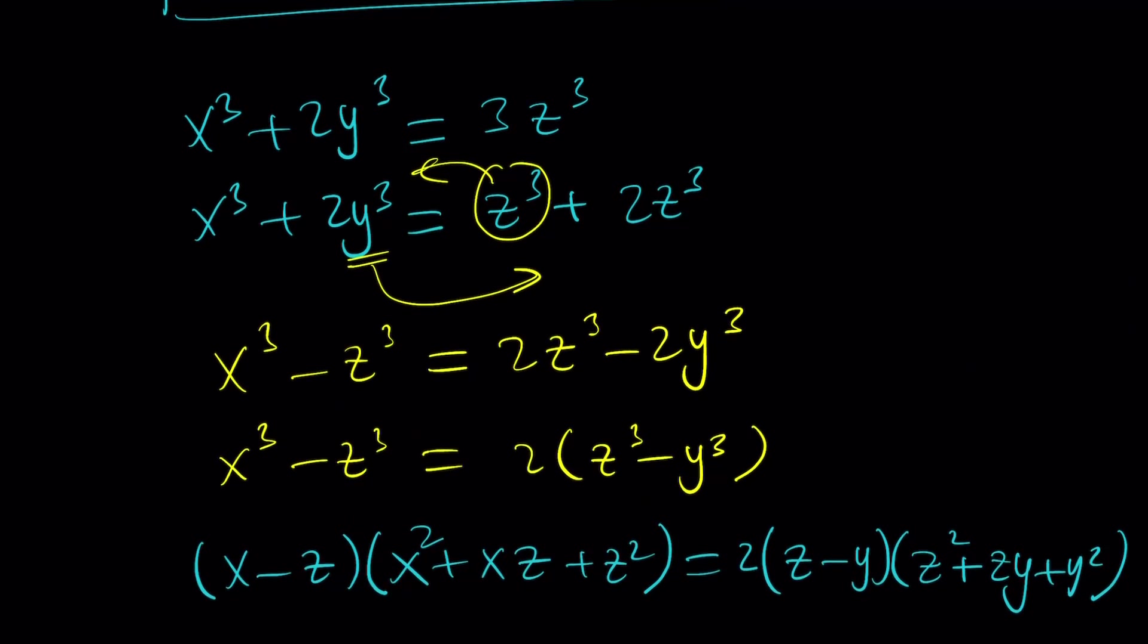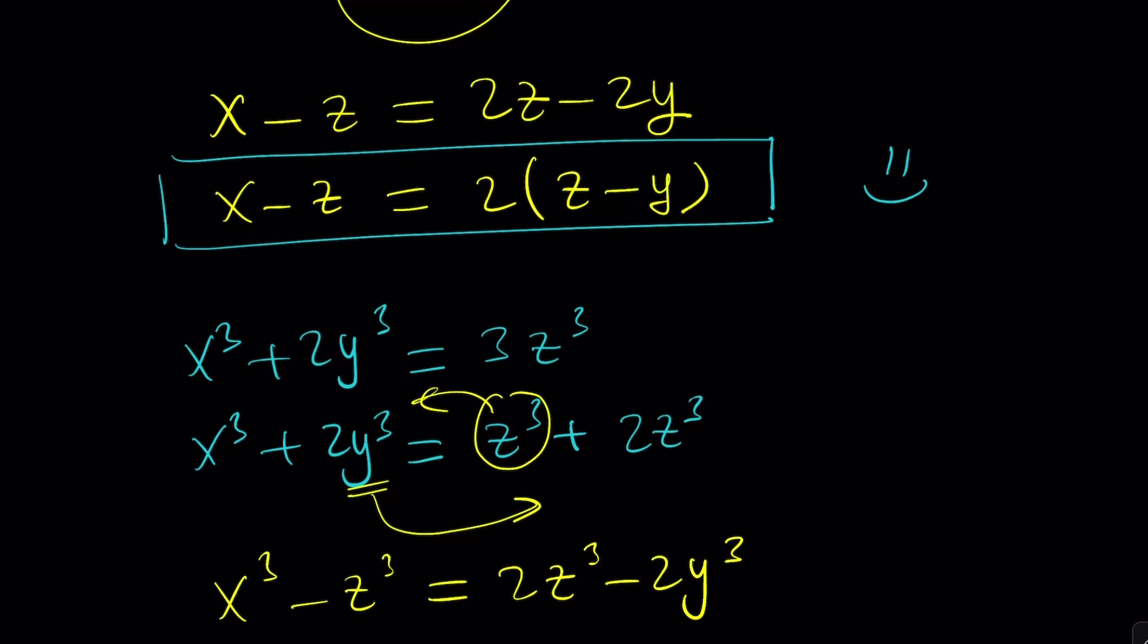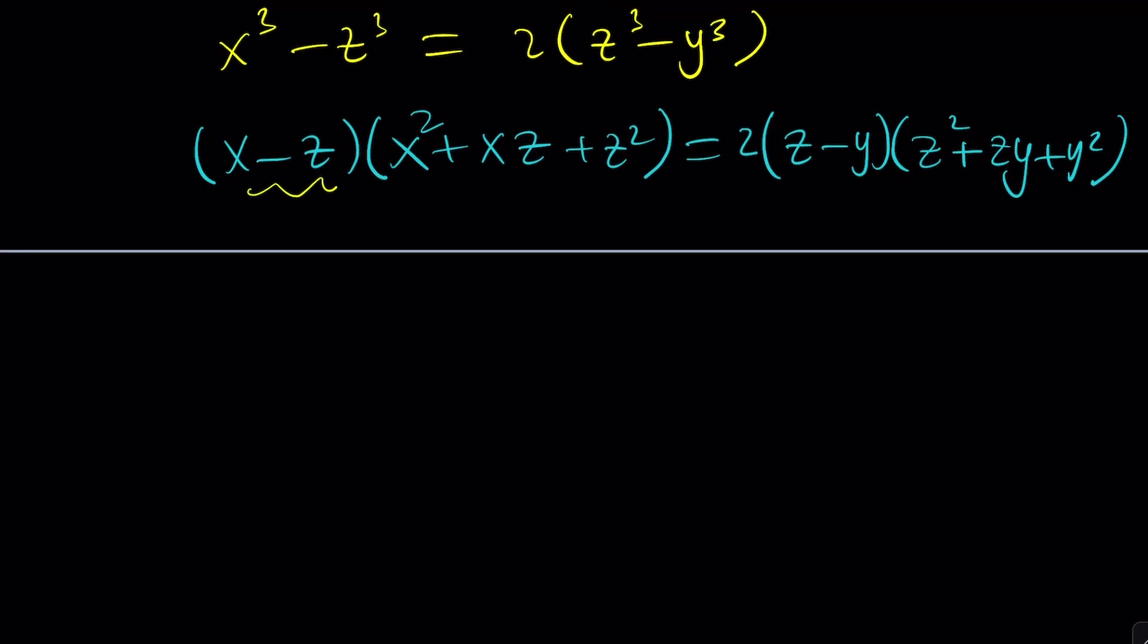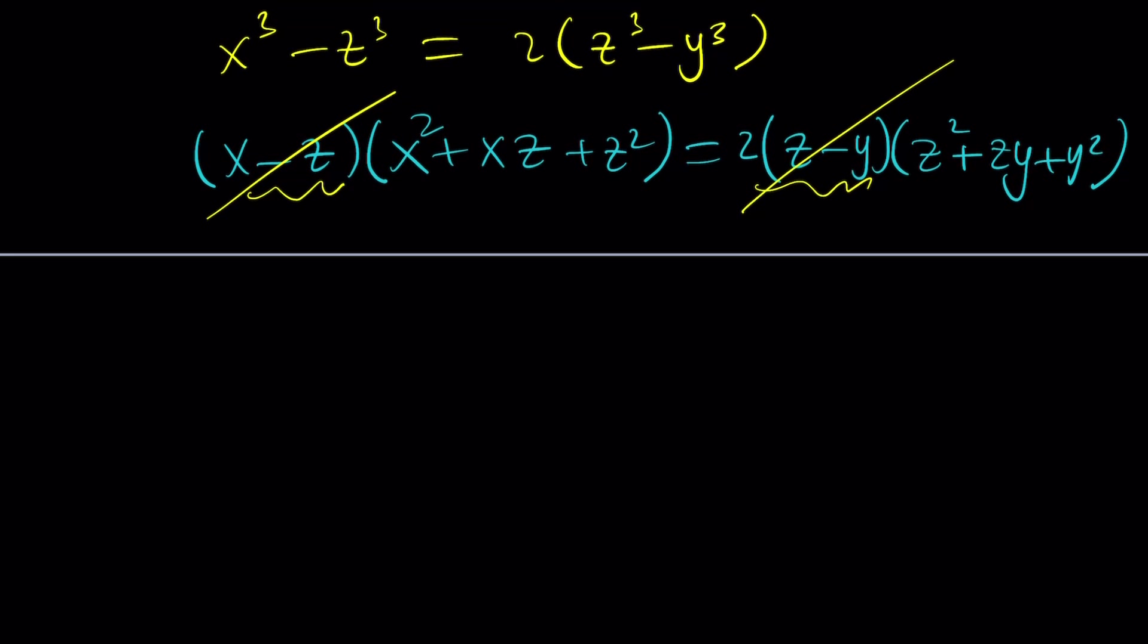We can basically factor it as x squared plus xz plus z squared multiplied by x minus z. Same thing on the right-hand side. Now remember, there was an equation that we boxed. What was it? It said x minus z and 2(z minus y) are proportional. Actually, x minus z is 2 times z minus y. Very cool. So we can just cancel them out. Notice that x and z are different and y and z are different. So they're not zeros. Make sense? That's important.